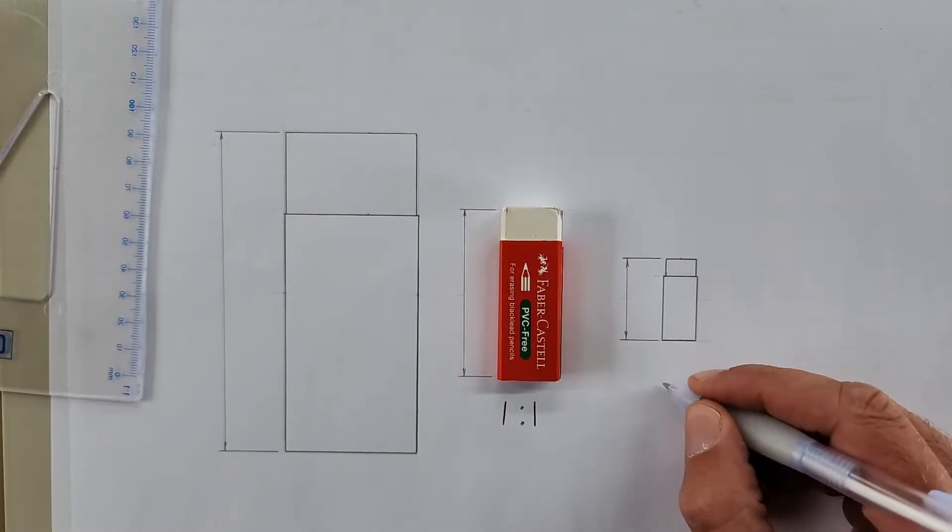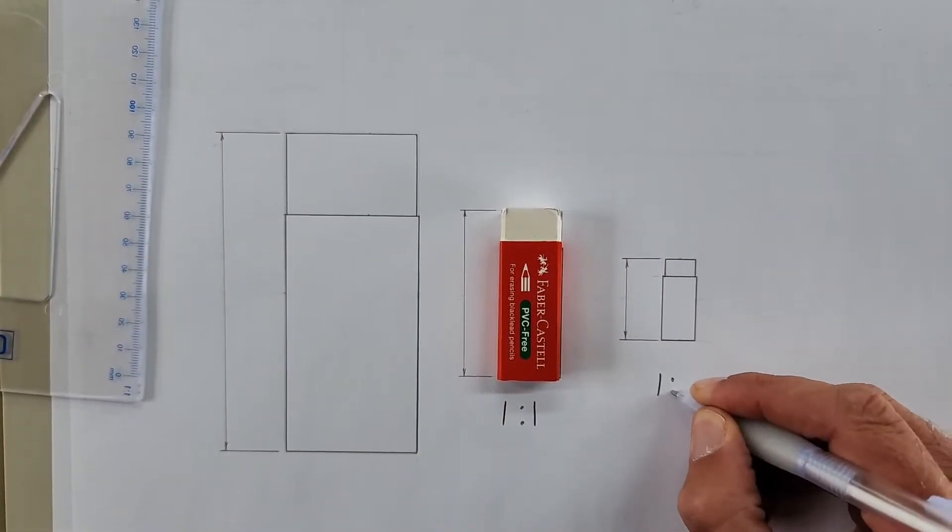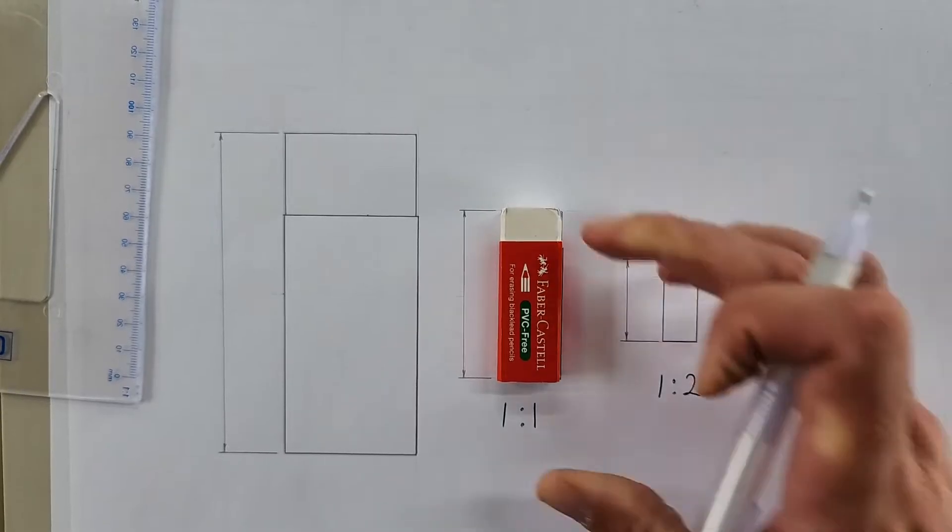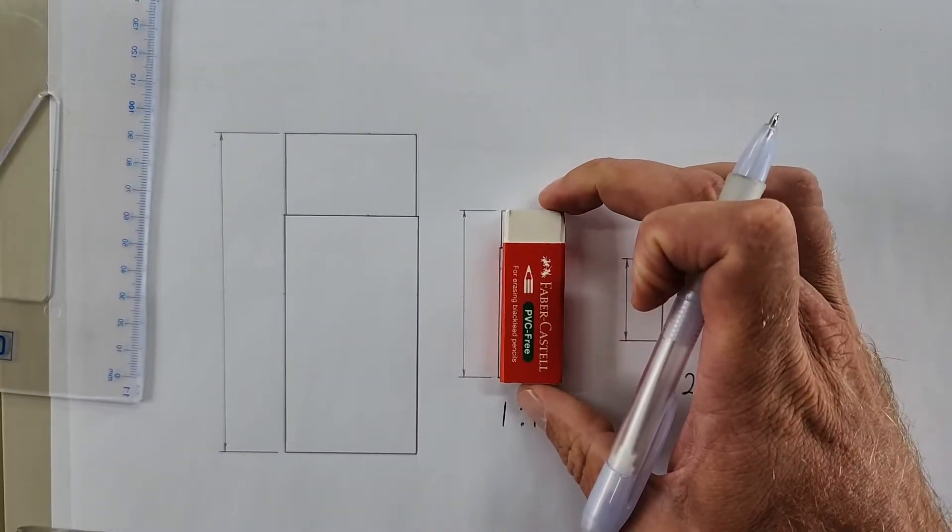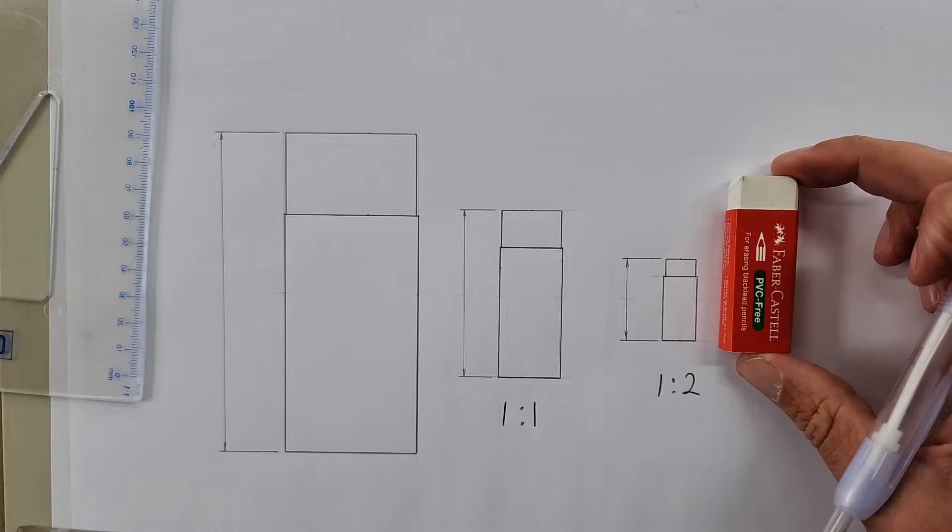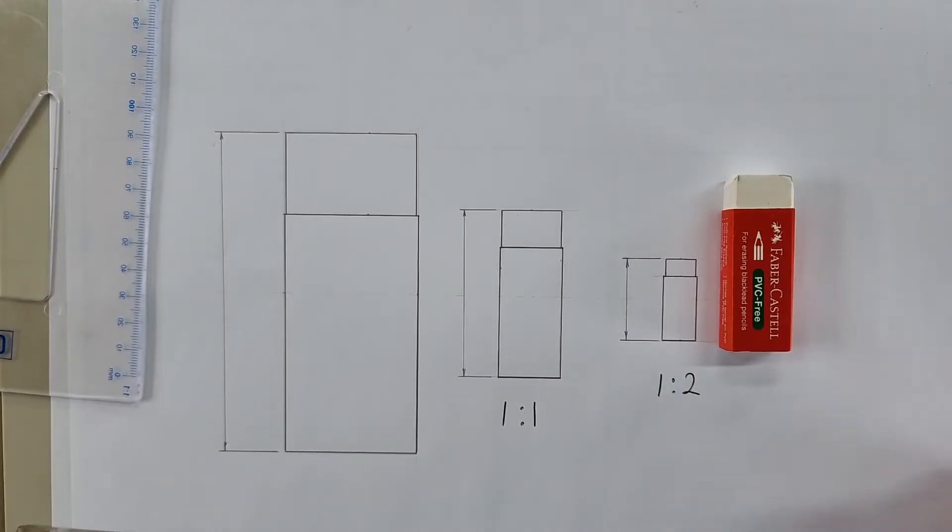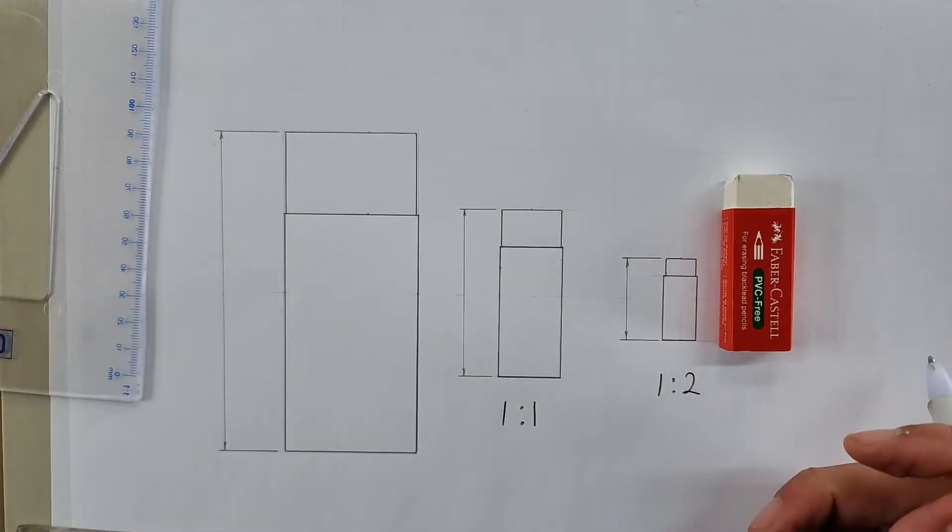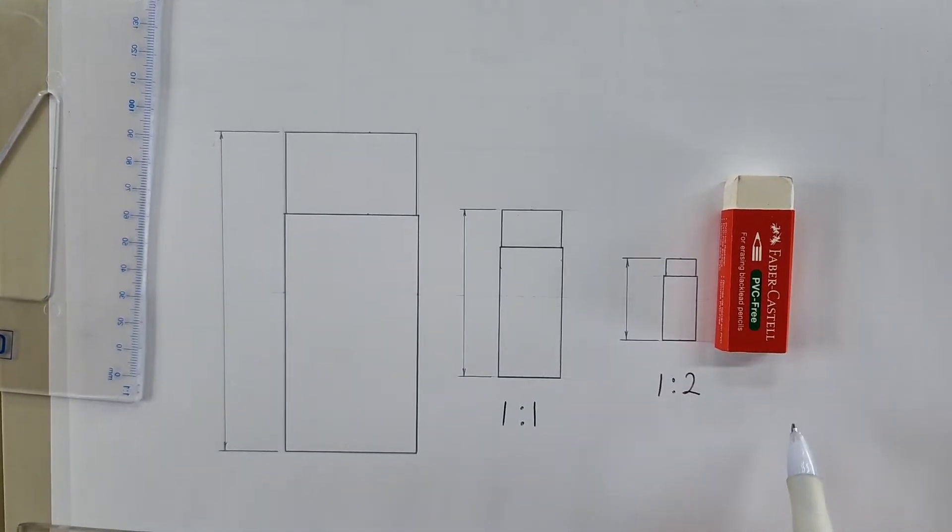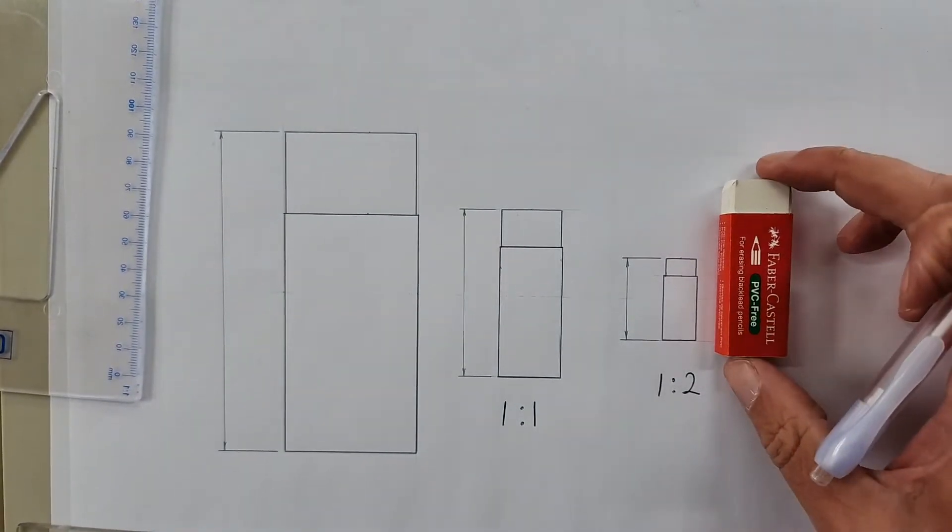Sometimes they ask you to draw something scale 1 to 2. That means that it is now half the size of its original size. Do you see that? Half the size.